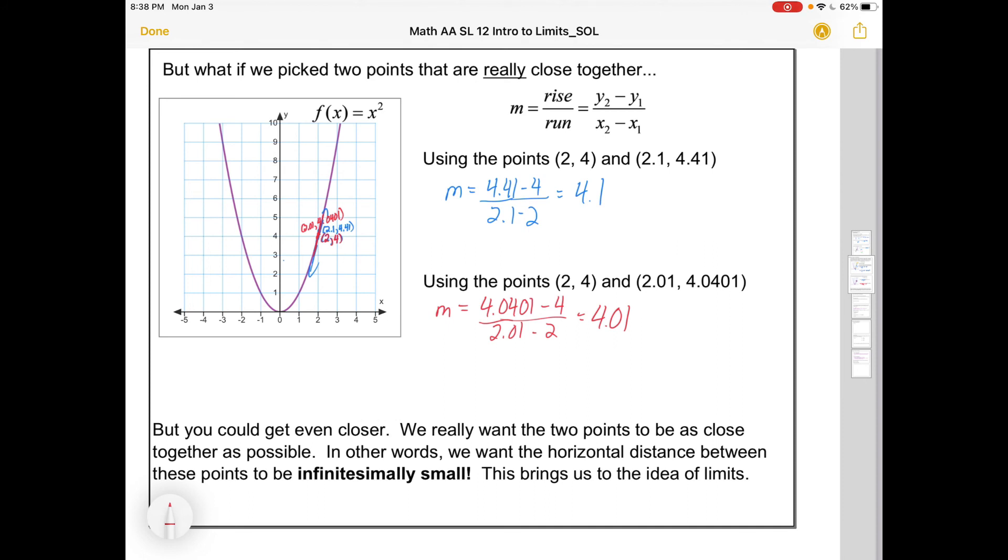The thing is, you could always get a little closer. We could go 2.001 or 2.0001. What we really want is two points to be as close together as possible. In other words, we want the distance between these points to be infinitesimally small. And that's going to bring us to the idea of limits.